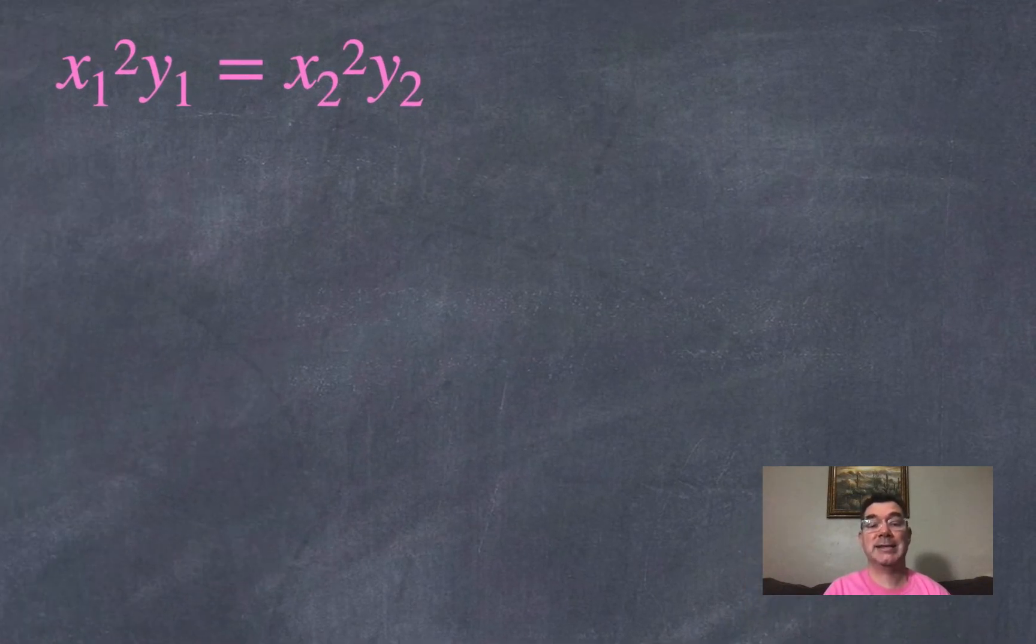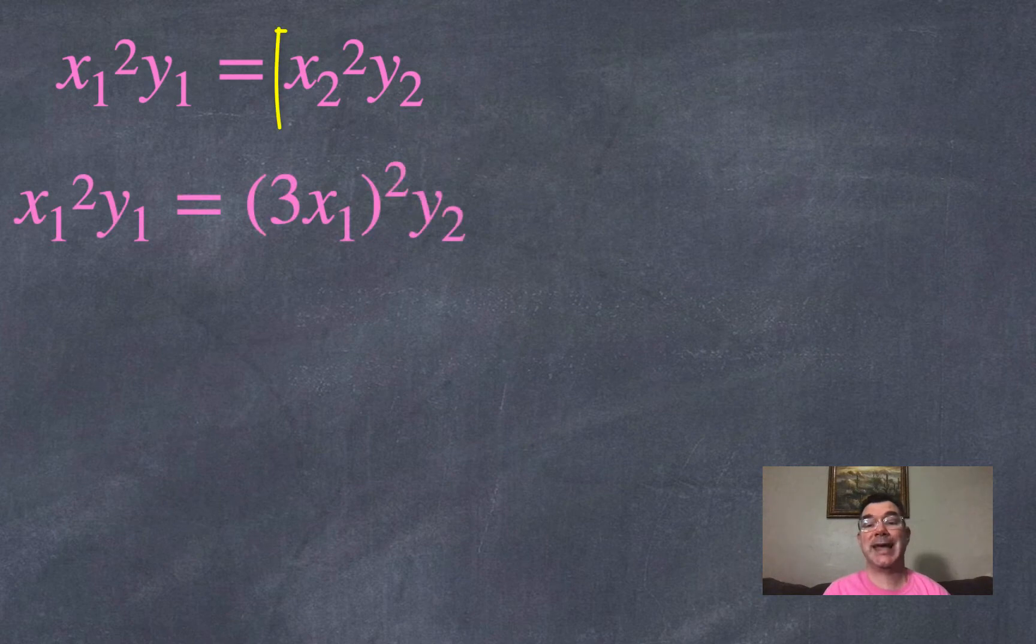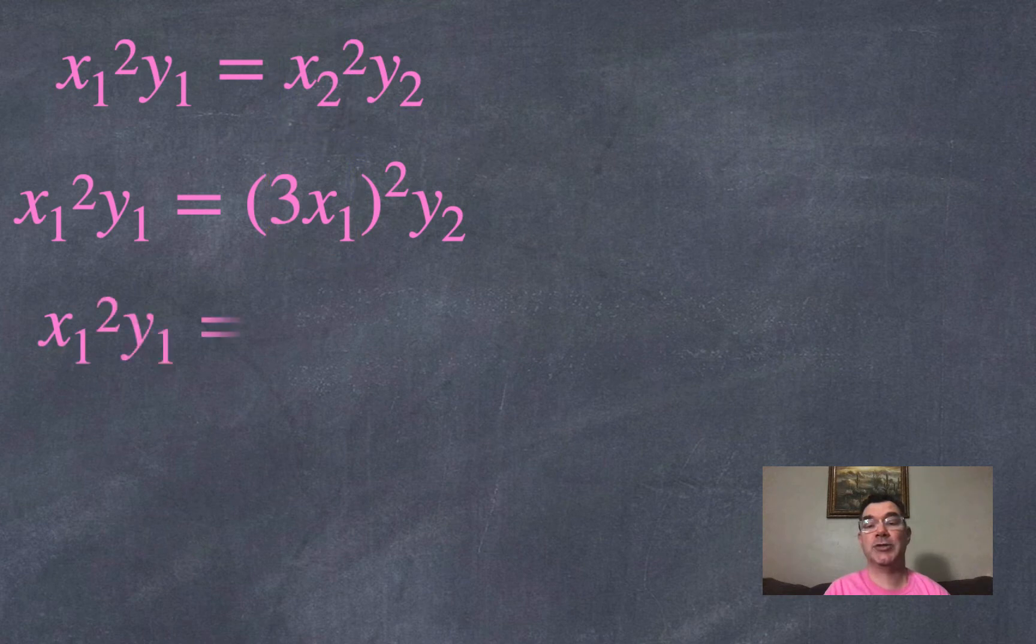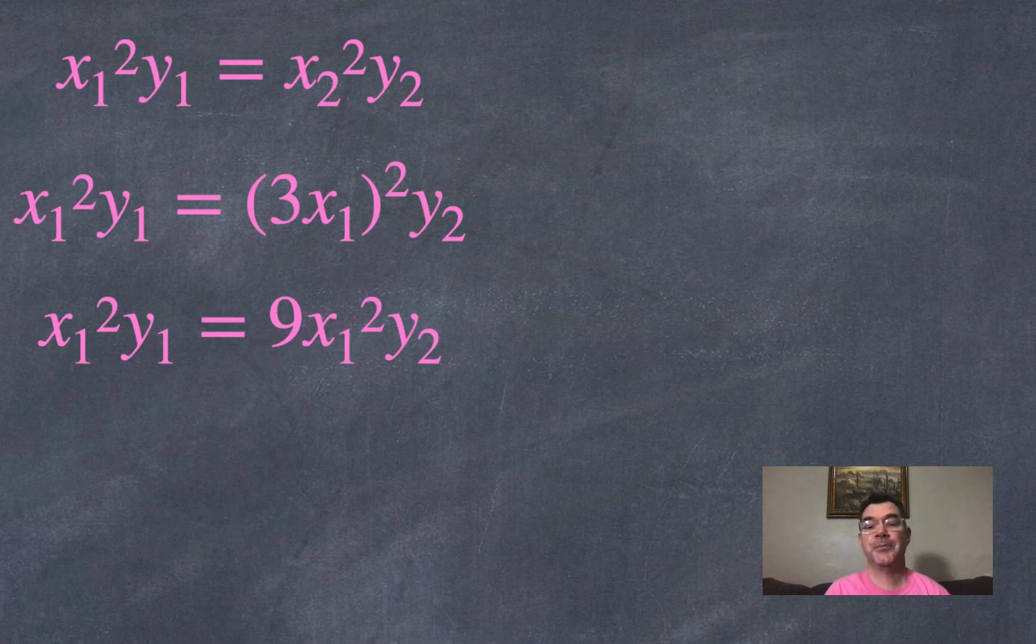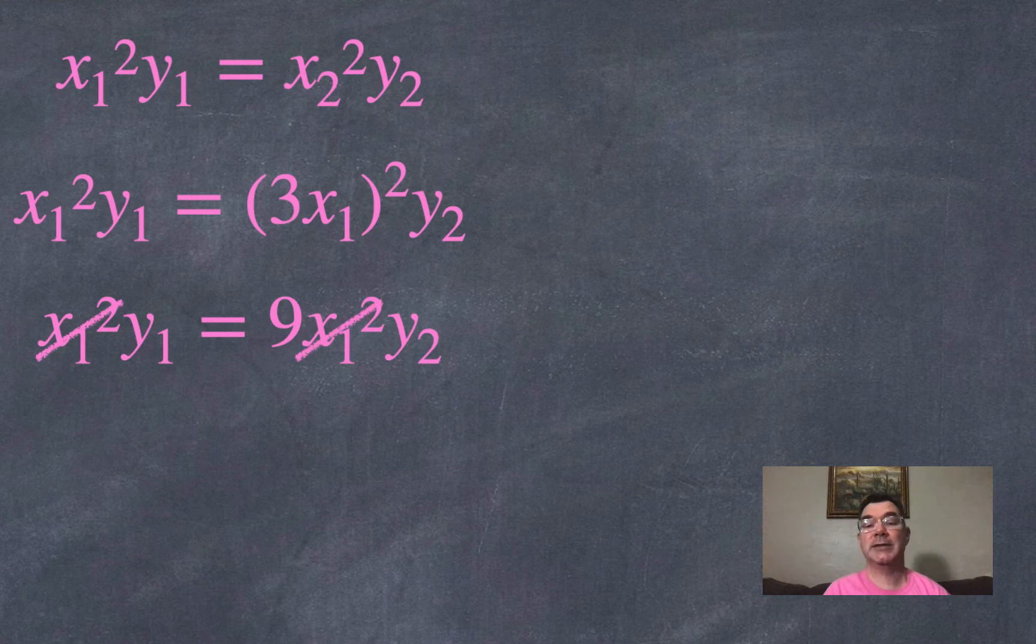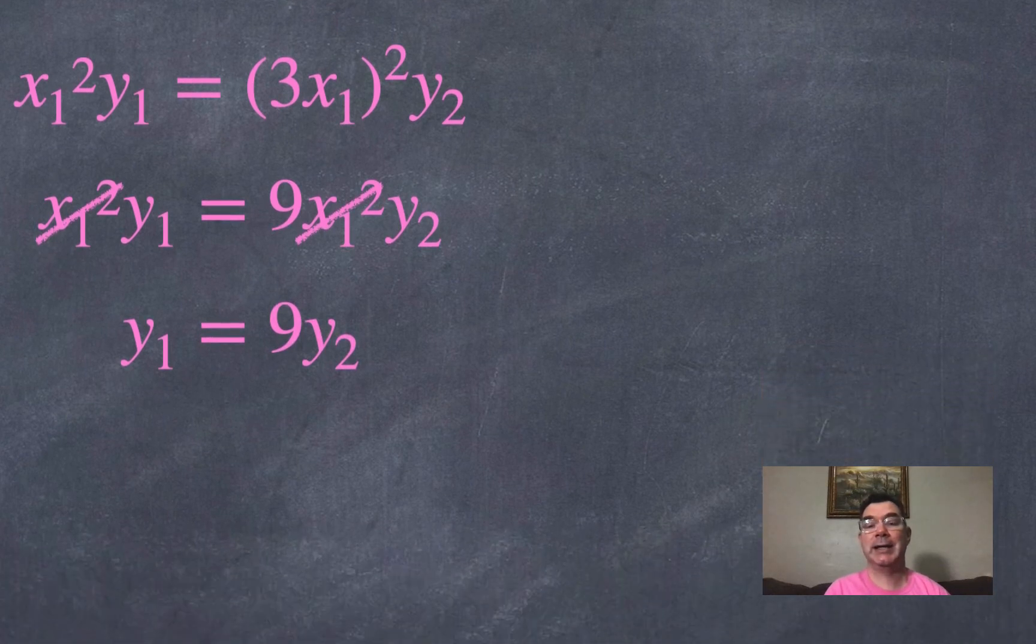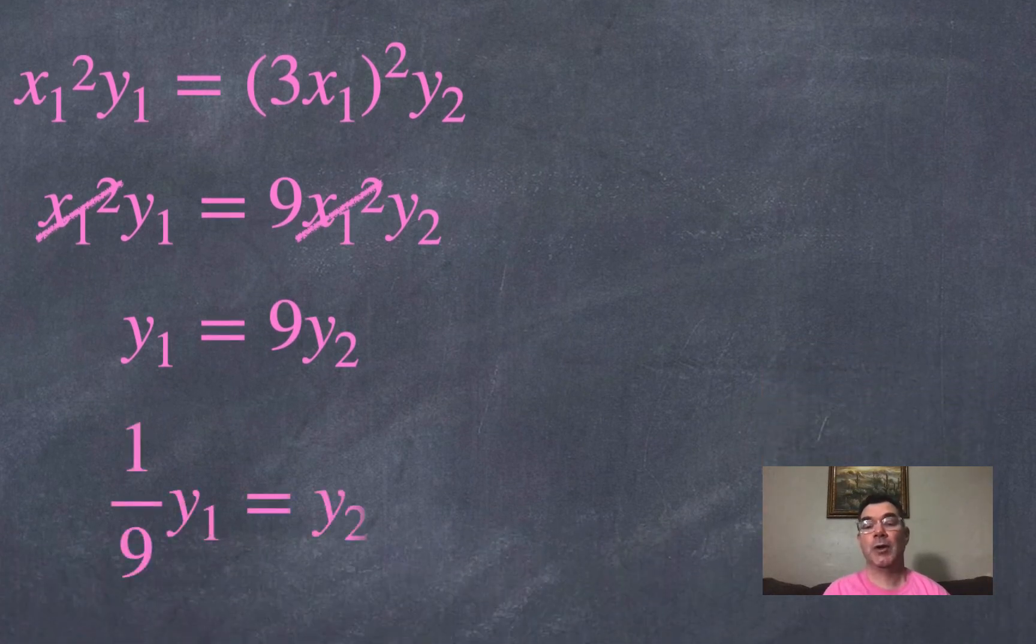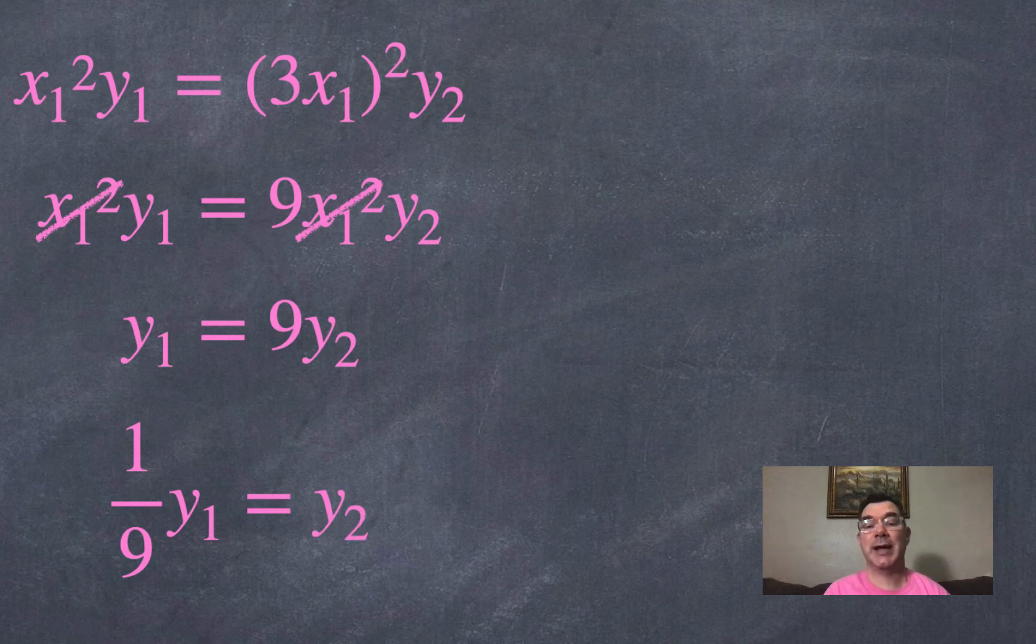So if x is being tripled then I can replace x₂ with 3 times x₁ and that all gets squared, so when I simplify those parentheses, 3x₁ all squared is going to be 9x₁ squared. Now I need to solve this equation so I can divide out the x₁ squared on each side, and so I get that y₁ equals 9 times y₂. If I divide both sides by 9 I get that 1/9 y₁ equals y₂.